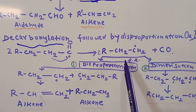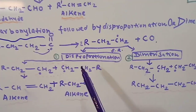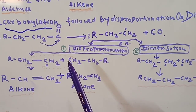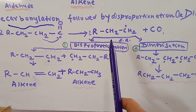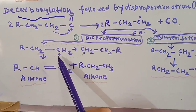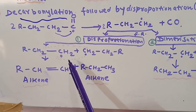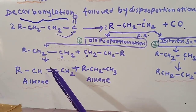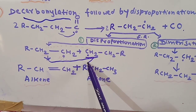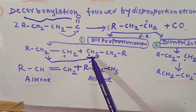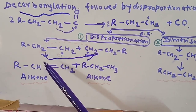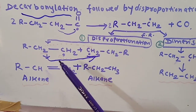In disproportionation, two molecules of the alkyl free radical RCH₂CH₂ are taken. One hydrogen is abstracted from one free radical and transferred to the second, so one alkene and one alkane are formed — for example RCH=CH₂ and RCH₂CH₃. This is disproportionation.